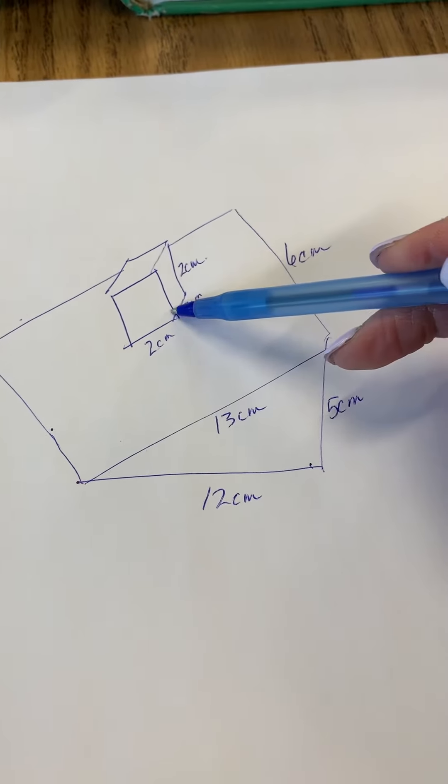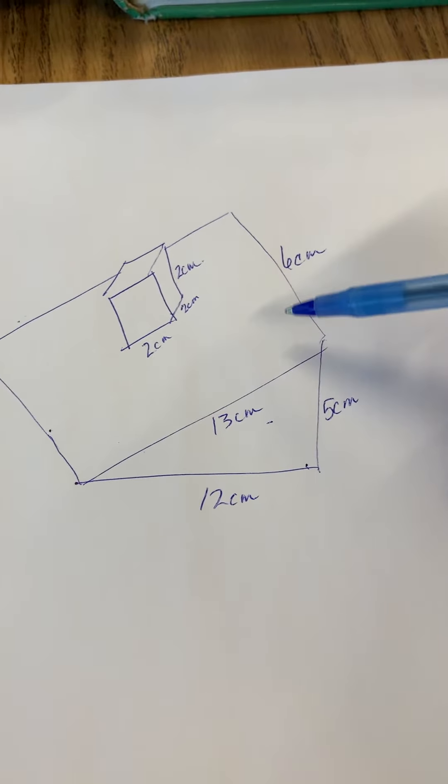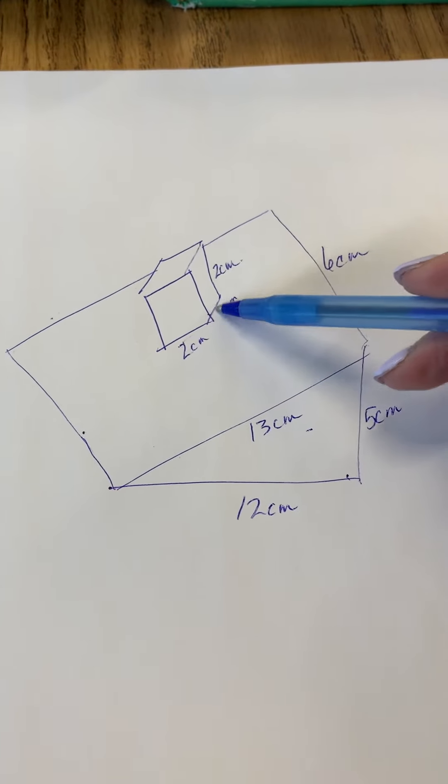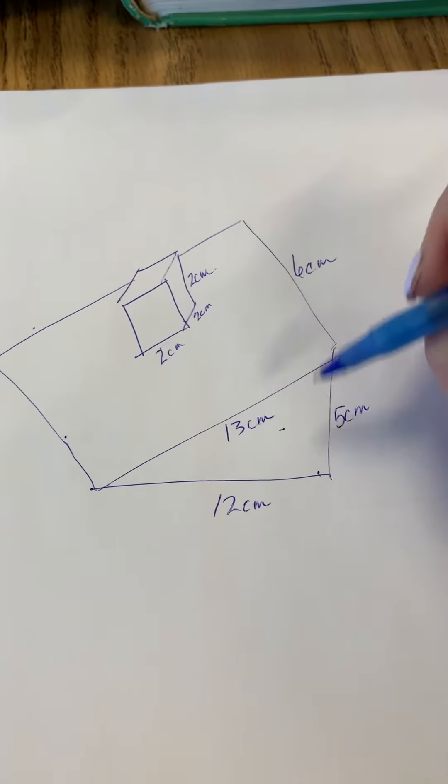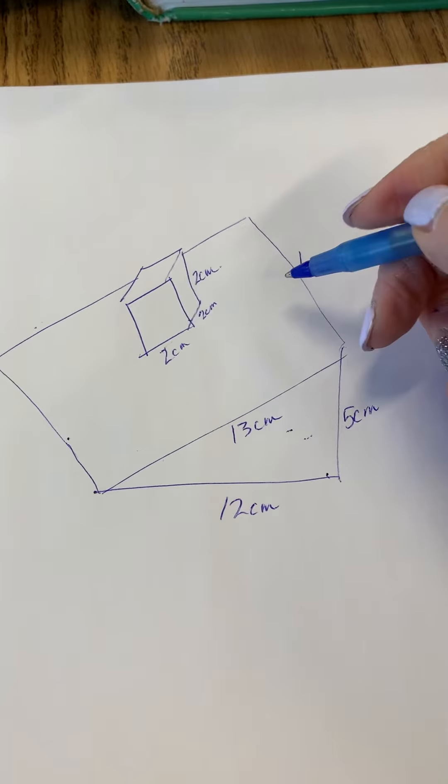Okay, here we go. A cube sitting on top of a triangular prism. I know it's a cube because it's 2 by 2 by 2, all sides the same. Triangular prism, well you recognize that pretty easily because of the triangle.